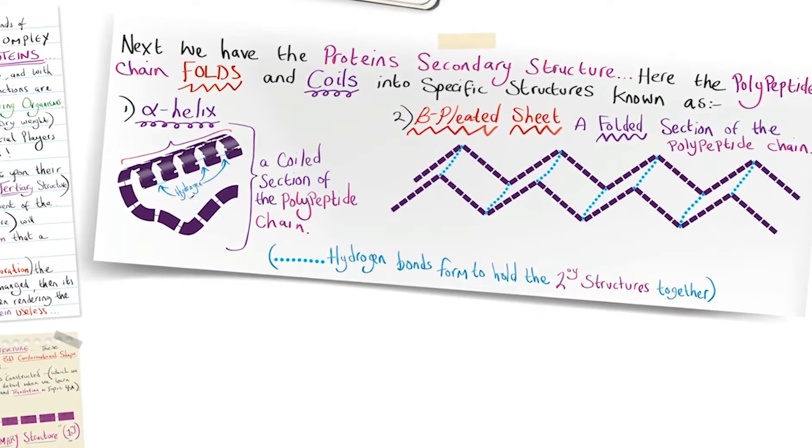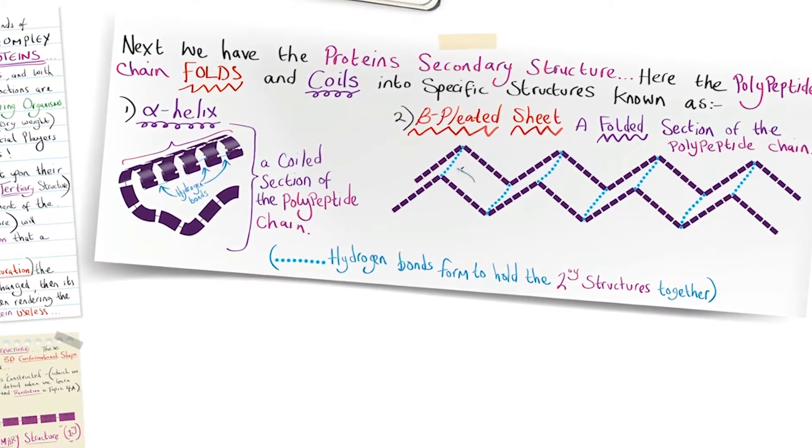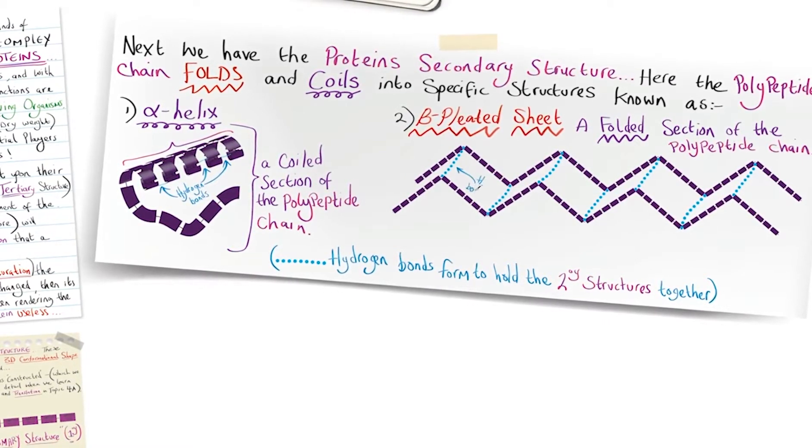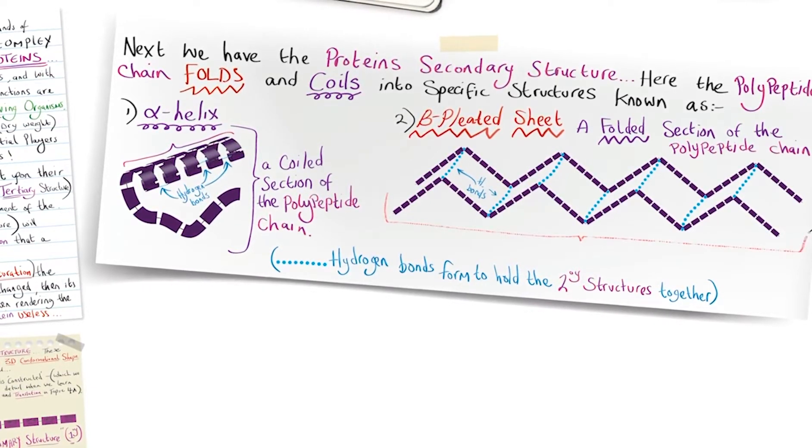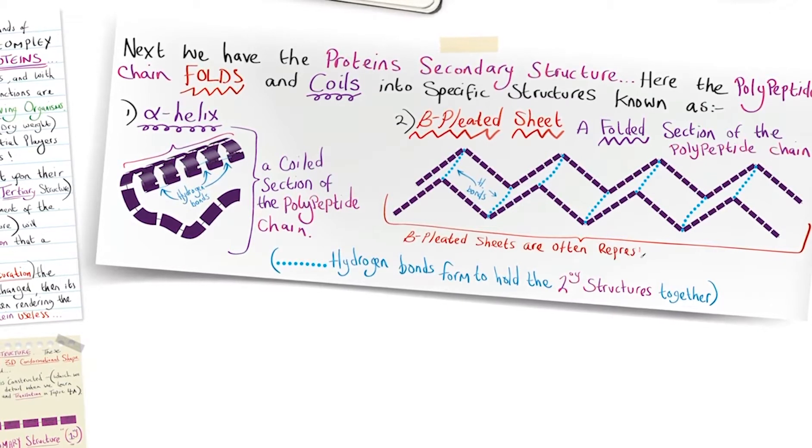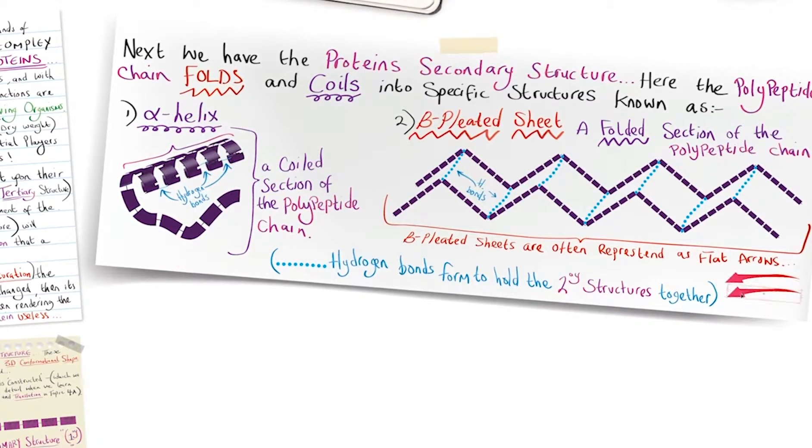The hydrogen bonds are shown here on the alpha helix and between parallel polypeptide chains of the beta pleated sheet. In diagrams and many textbooks, beta pleated sheets are often represented as flat arrows like this.